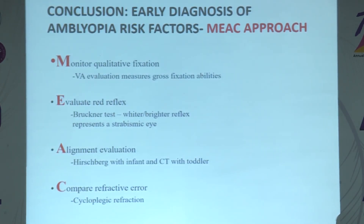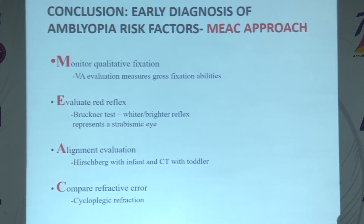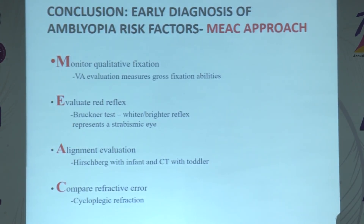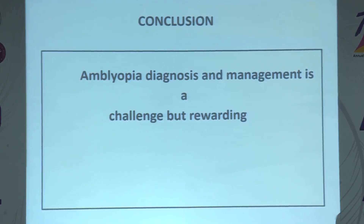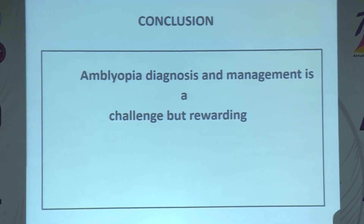The MAKE mnemonic has been used for early diagnosis especially in younger children less than one year. M stands for Monitor qualitative fixation. A stands for evaluation of the red reflex using the Brückner test. K stands for alignment evaluation using the Hirschberg test in infants and cover test in toddlers. E stands for comparing refractive error by doing cycloplegic refraction between the two eyes. These factors help in early detection especially where visual acuity testing is not possible.